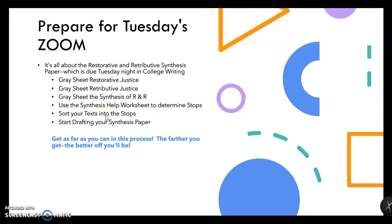You're going to sort your texts into the stops and then start drafting your synthesis paper. All of these steps are what you saw modeled for commutative and distributive synthesis, as well as social and procedural synthesis. This time you're on your own for restorative and retributive. You've seen everything modeled twice now — you should be ready to try this. Get as far as you possibly can in this process so you bring as much as you can to Tuesday's Zoom class.